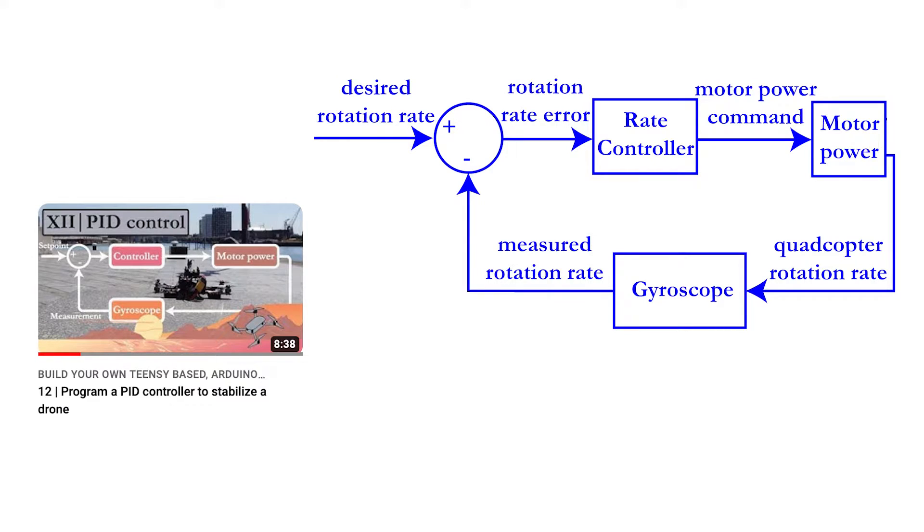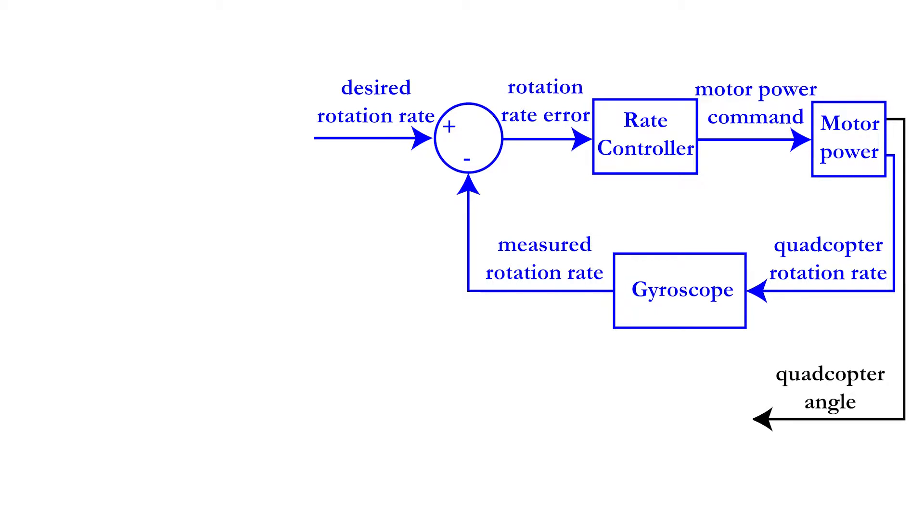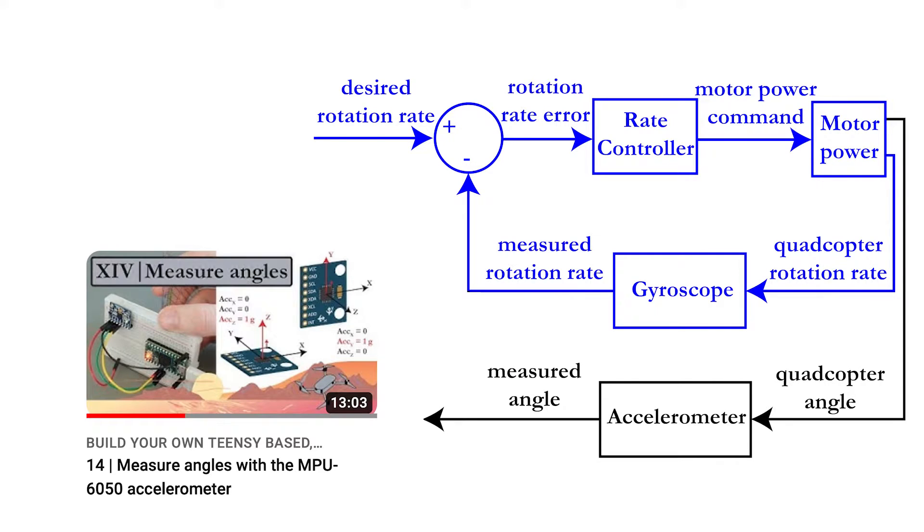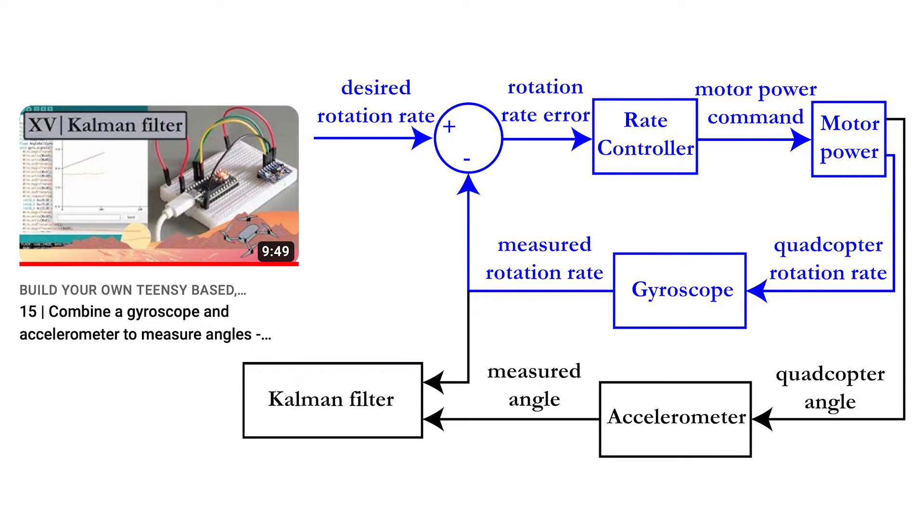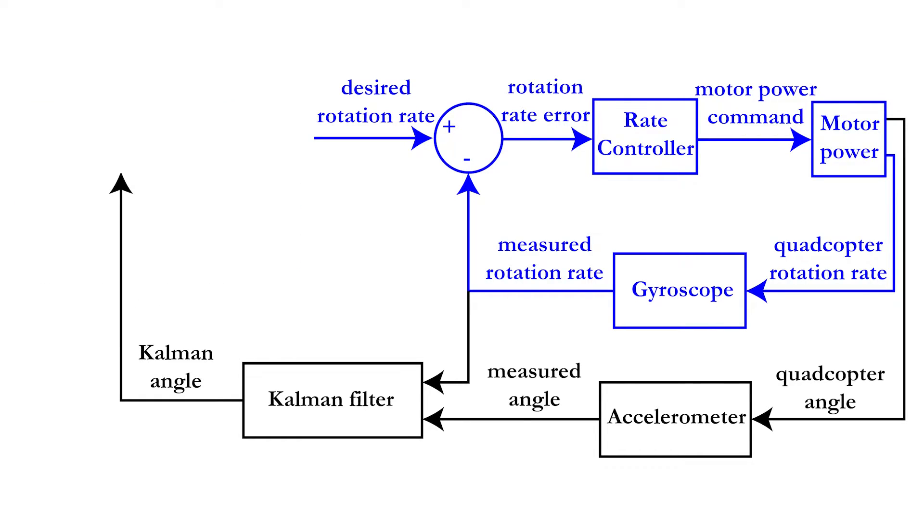Let's start from the flight controller developed in part 12 which was based on the rotation rates. Instead of only measuring the quadcopter rotation rate with the MPU6050 gyroscope, you will now measure angles using the accelerometer of the same sensor. Both the measured rotation rate and the angle are then used in our Kalman filter, which will give a precise and accurate value for the angle.